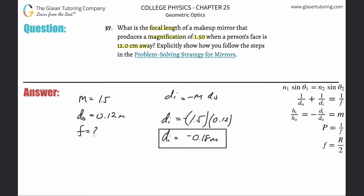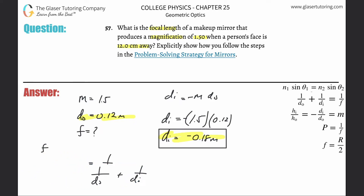Now that we have the image distance, to find the focal length, knowing both the image distance and the object distance, we can use the thin lens equation — also the mirror equation: 1 over Do plus 1 over Di equals 1 over F. Solving for F, we do a little cross-multiplication, bring F out of the denominator, so F equals 1 over that whole expression. This is 1 over (1 divided by the object distance, which was 0.12) plus (1 over the image distance, which is negative 0.18).